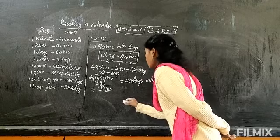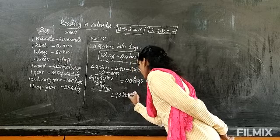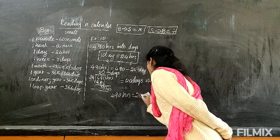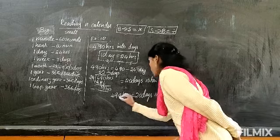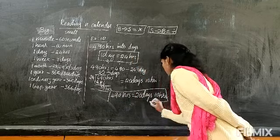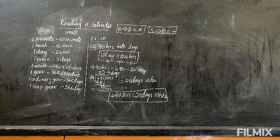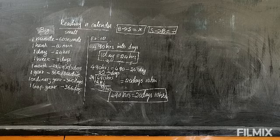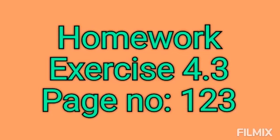So the answer is 490 hours equals 20 days and 10 hours. This is the complete answer. Now look at the examples I have given and do the problems. Thank you.